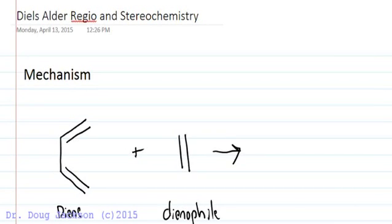So first let's look at what the Diels-Alder reaction actually is mechanistically. It's a 4 plus 2 pericyclic addition and it involves 4 plus 2, 6 total pi electrons.